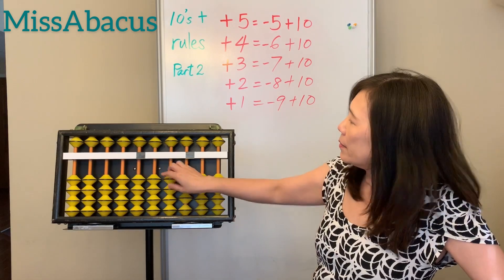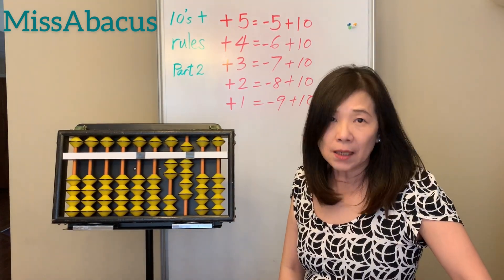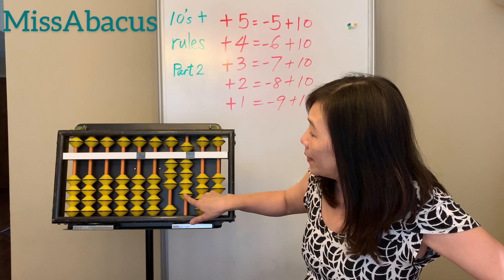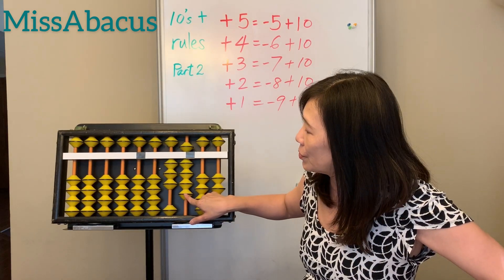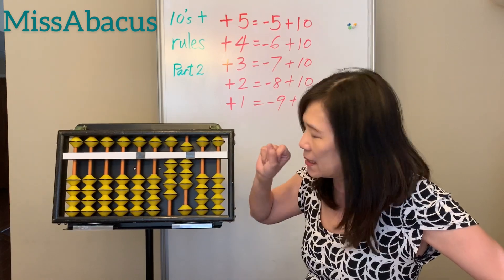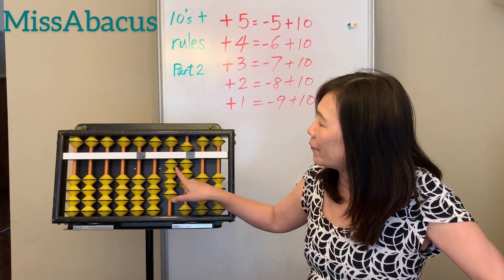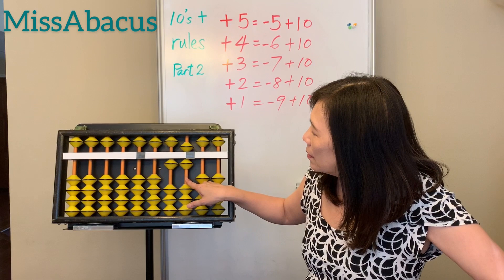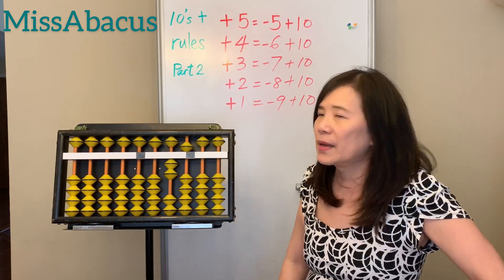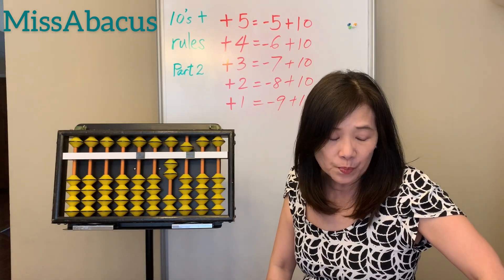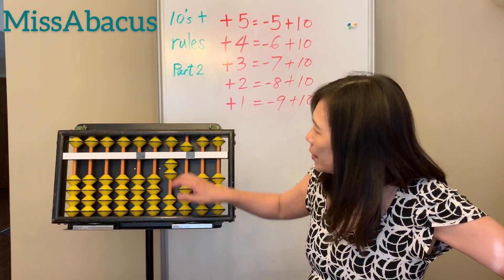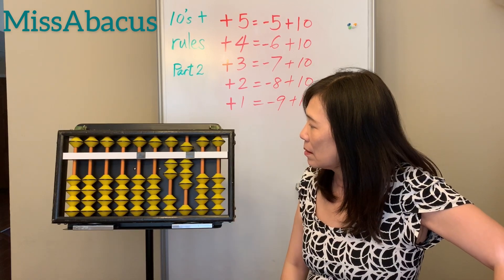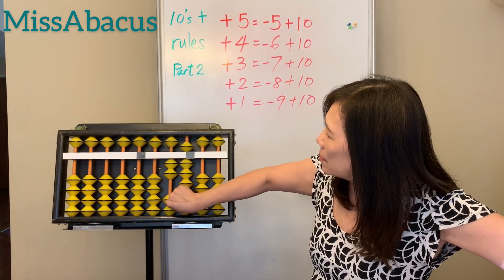Now let's look at page two of the homework. First number: 29 plus 19. For the 19 — tens place one, nine — nothing left, so you need to use the rule. Nine: plus one plus ten. You have three here, you have two here. Plus nine again — you only have three left, so minus one plus ten. Answer is 25. That's page two, problem one. Let's do number 11: 28, with 2 and 8 here. Plus 18 — do the ten first, then the 8.